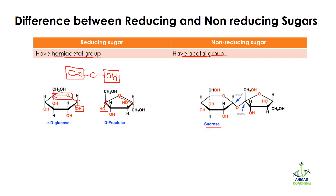In the case of sucrose, we do not have any hemiacetal group; instead, we have an acetal group in which one carbon is attached with two OC groups. Here we can see one OC group and another OC group. When one carbon is attached with two OC groups, that sugar is going to be a non-reducing sugar.